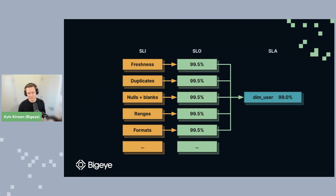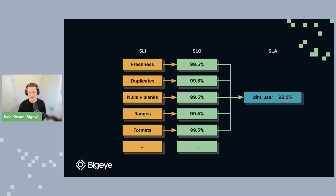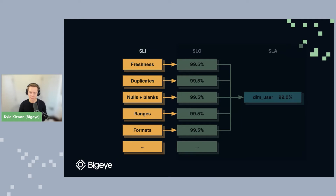SLIs on the left - that's what we'll talk about first. SLIs help us measure what's happening inside our data. Then our SLOs in the middle help us set targets for the performance of those different attributes we care about. And finally, we'll talk about SLAs - that's how we package it all together into one contractual agreement that explains what a team should expect about data being consumed out of the data platform.